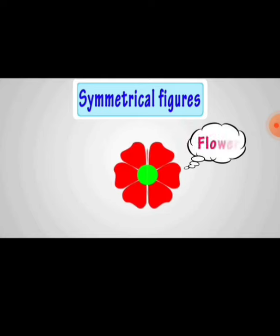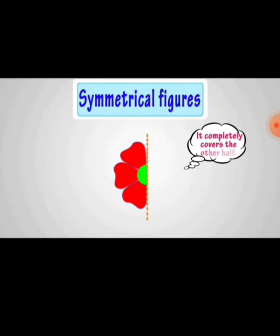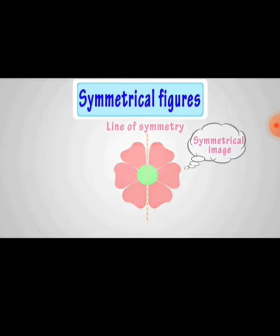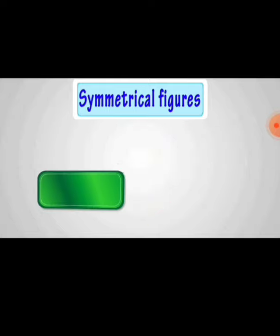Observe the figures. A flower is divided by dotted lines. This dotted line is called line of symmetry. When we fold one half completely, it looks the same. This is called a symmetrical shape or symmetrical image.